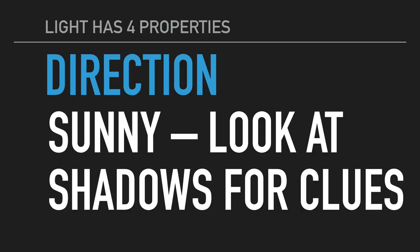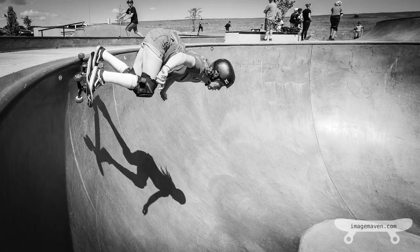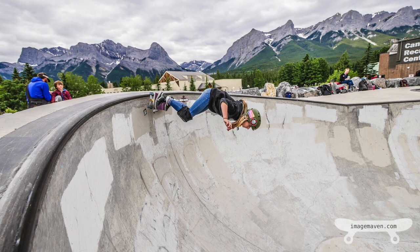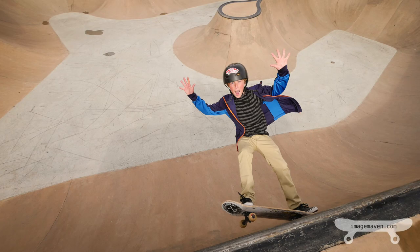Direction — natural light comes from the sun. If it's sunny, it's really easy to see where the light is coming from; you just have to look at the shadows for clues. If it's cloudy, it seems like the light comes from everywhere and nowhere. Now, skate parks have concrete, so the light can also reflect and bounce onto your skater.